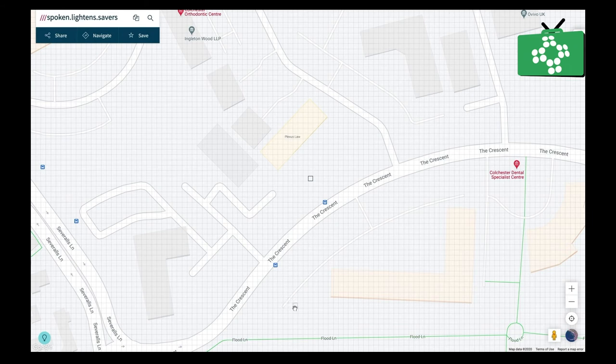As you can see, depending on which of the 3m squares we select, the 3 words in the top left of the screen will change. So you select the right place, and then you can note down these 3 words.